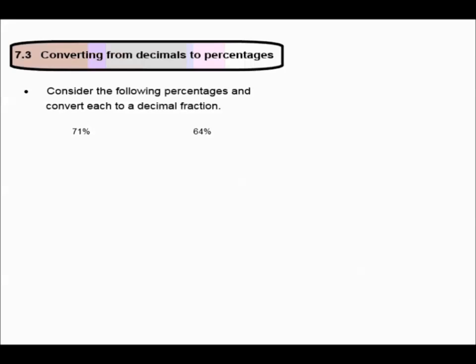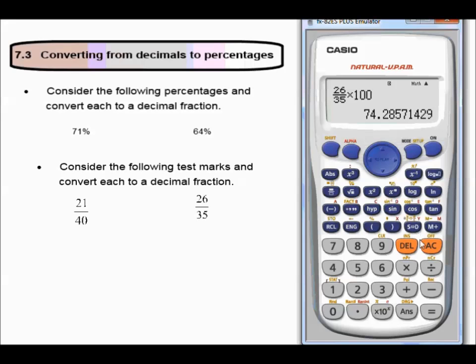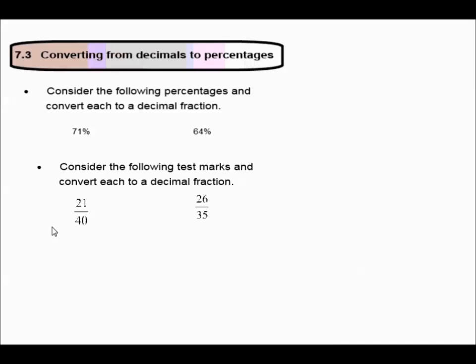Consider the following test marks, and convert each to a decimal fraction. To convert a common fraction to a decimal fraction, we said 21 over 40, or 21 divided by 40, so that would equal 0.525.